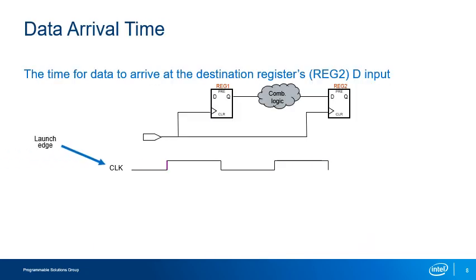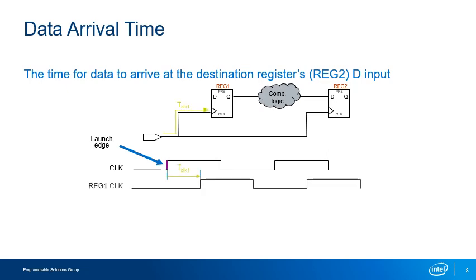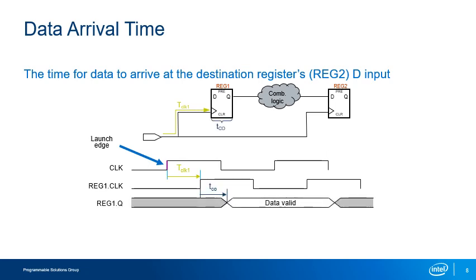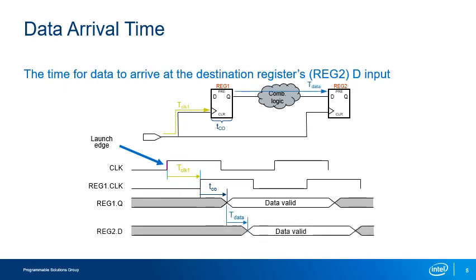Based on the launch edge, the data arrival time is defined as the time it takes for data launched from the source register to arrive at the D-input of the destination register. The data arrival time is calculated by adding the launch edge delay adjusted to a zero reference, the clock delay to the source register (TCLOCK1), the clock-to-output time (TCO) of the source register, and the data delay between the source and destination registers, including delays from any combinational logic in the path. The data arrival time defines the start of the data valid window at the destination register.